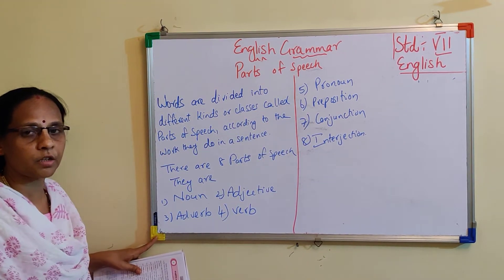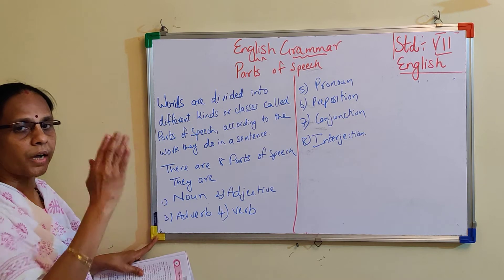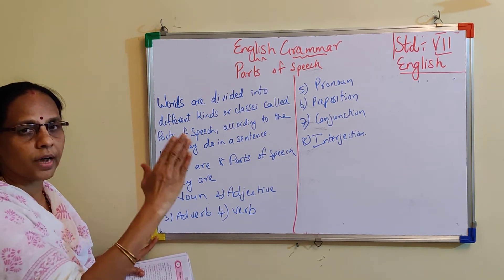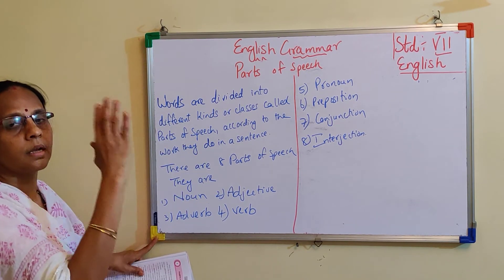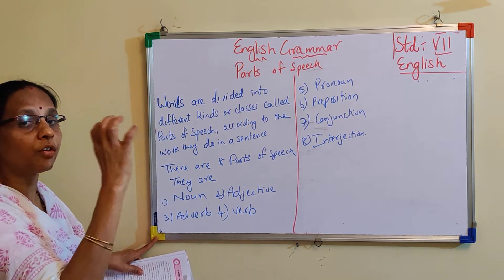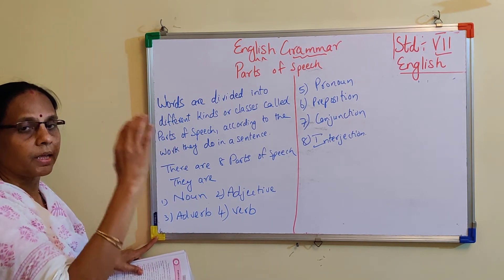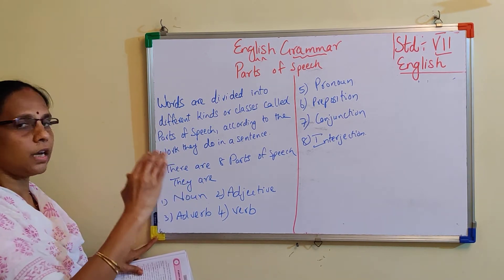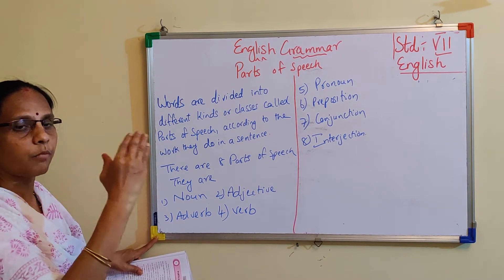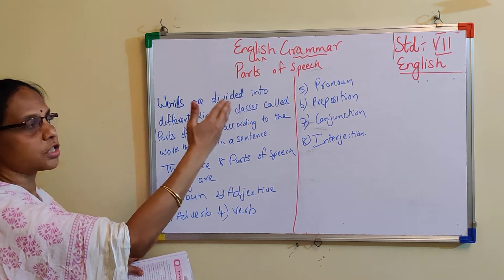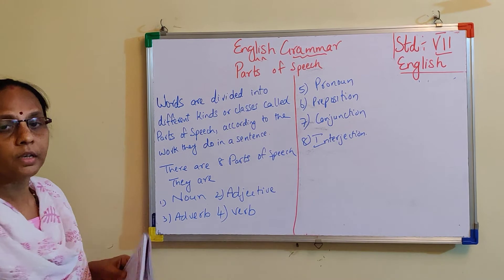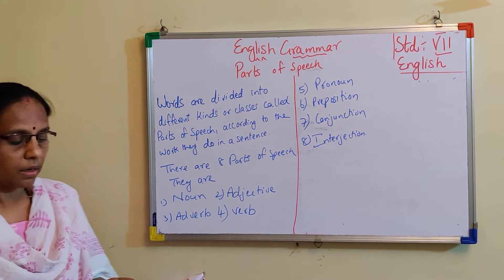These are the eight parts of speech. Parts of speech definition: words are divided into different kinds of classes called parts of speech, and it depends upon the work done. Eight parts of speech: noun, adjective, adverb, verb, pronoun, preposition, interjection, conjunction. Now each one of them we will explain.